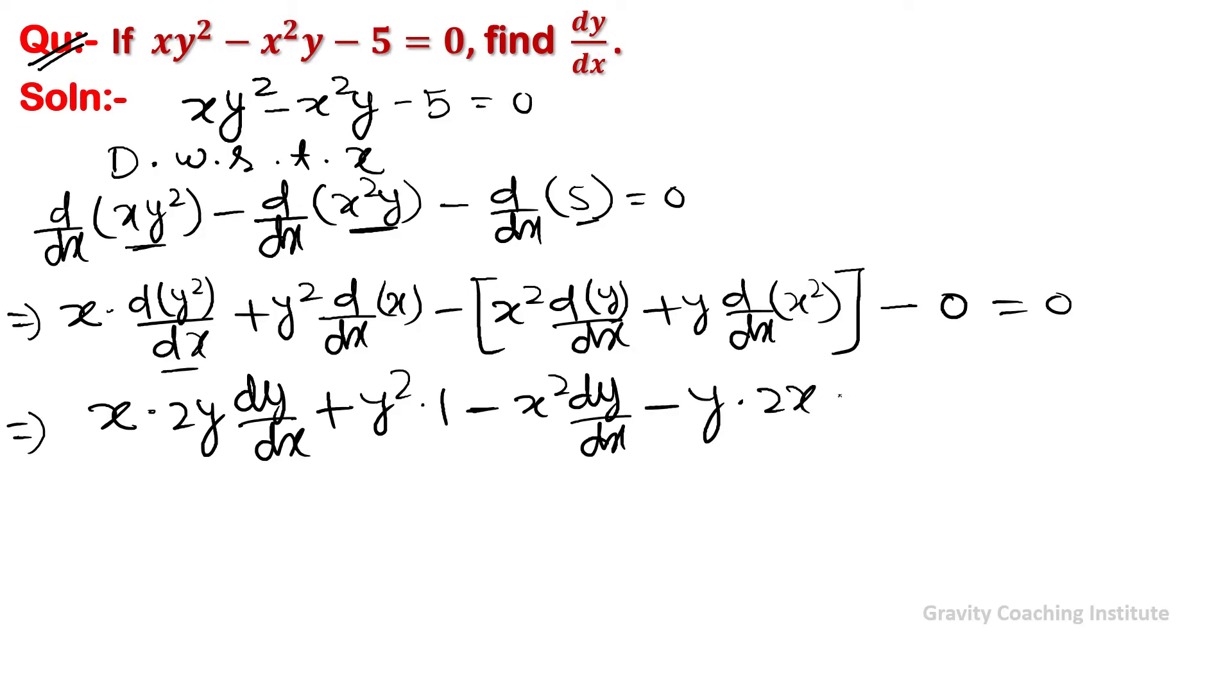Expanding this: 2xy dy/dx minus x² dy/dx minus (the derivative of x² is 2x) so minus y times 2x. This implies 2xy dy/dx minus x² dy/dx minus 2xy plus y² = 0.